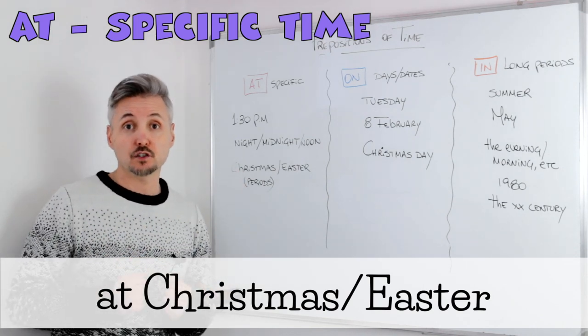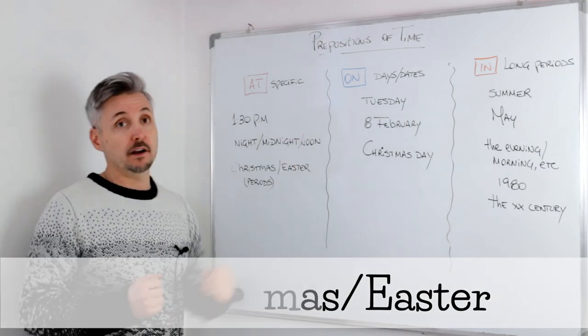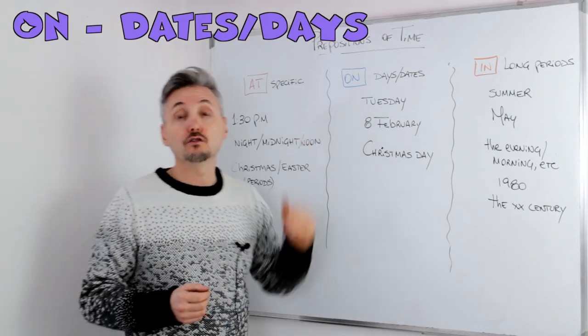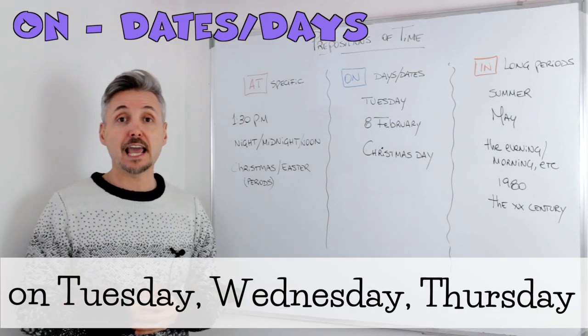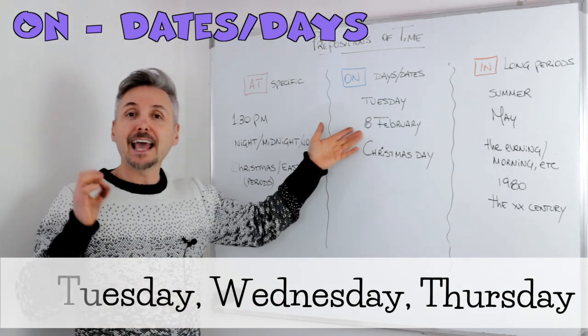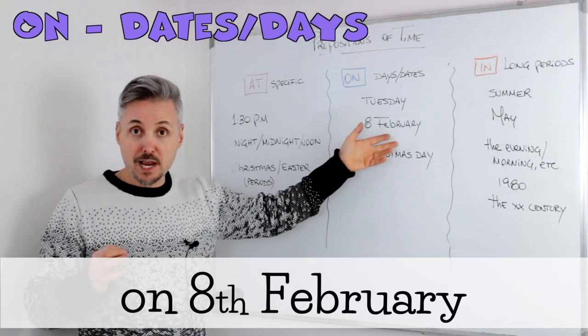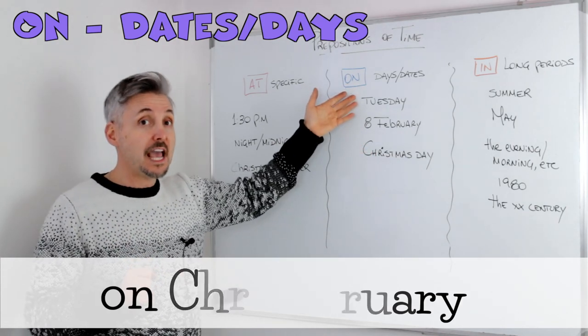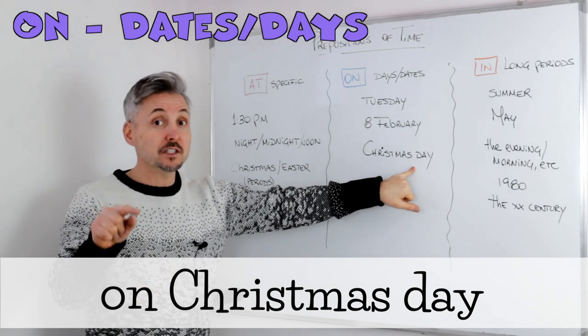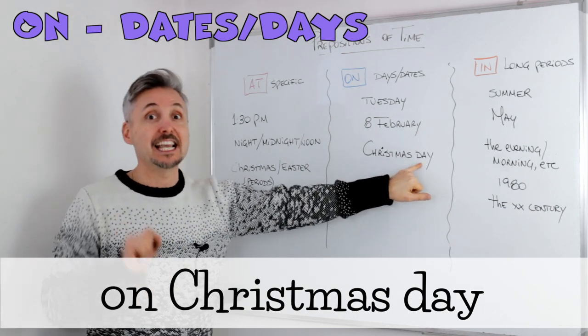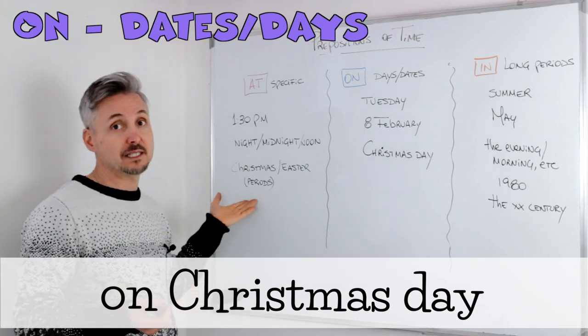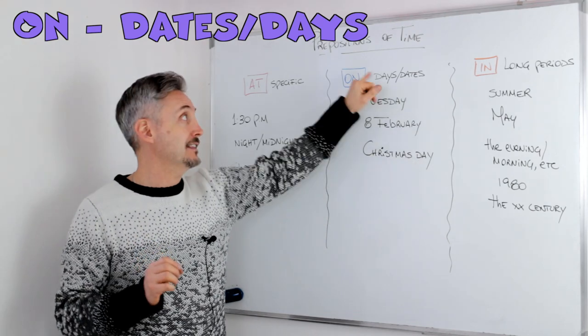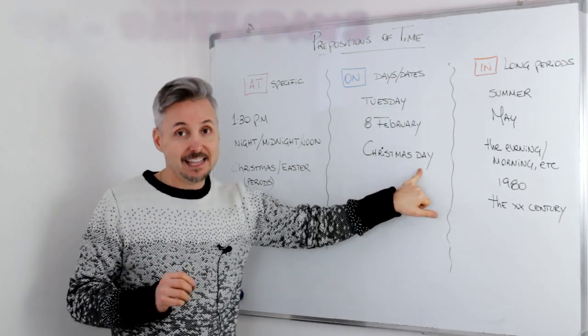Then we use on, on for what? On for dates or days. For example, on Tuesday, on Wednesday, on Thursday, on the 8th of February, so the specific date. And we also say on Christmas day. It's important that you say day at the end, otherwise it would be at Christmas, at Easter. So day is very important at the end of on, on Christmas a day.